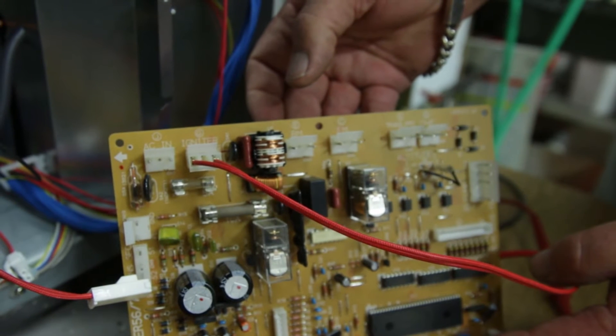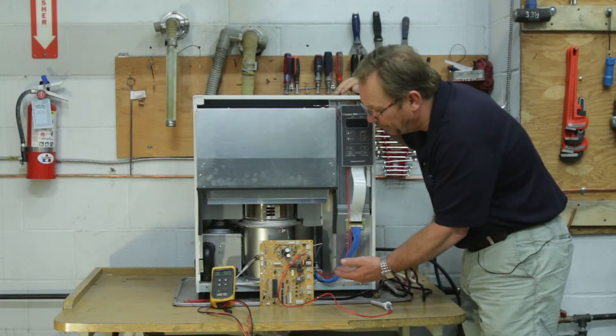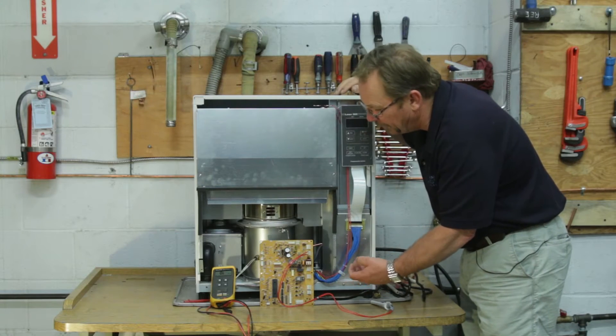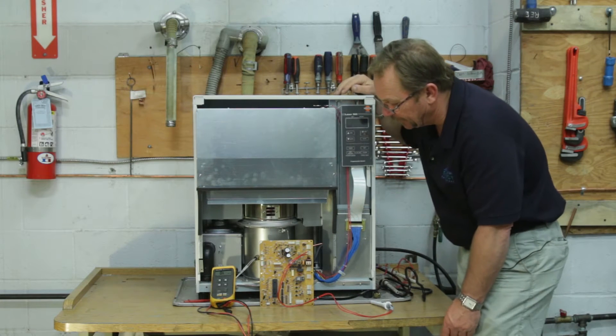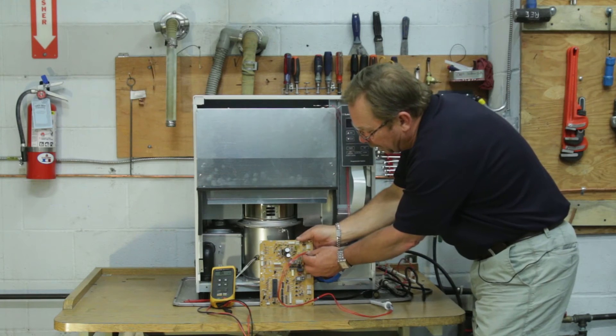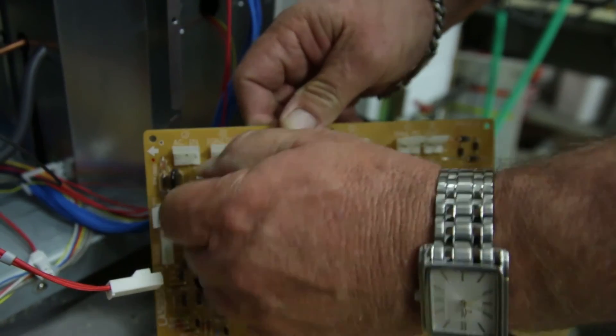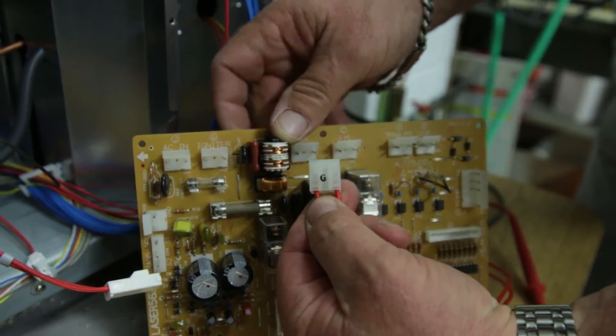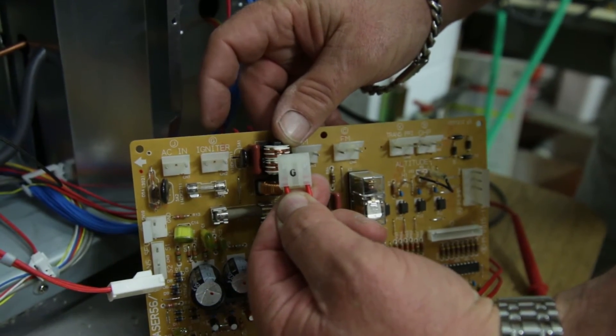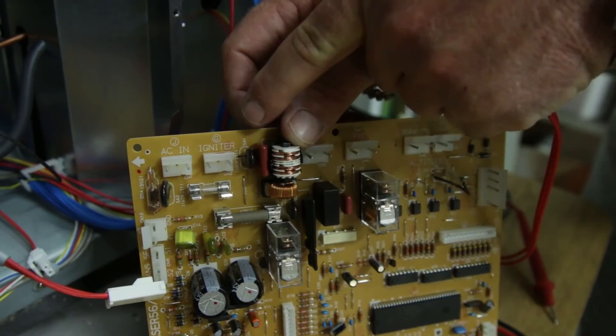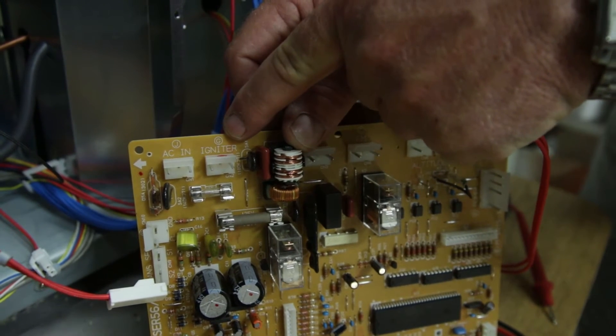Right here in front of us is a main circuit board out of an older Toyotomi stove. This is for a Laser 56, Laser 73. In order to get our measurement, we're going to unplug our molex pin connector right here. We can see that it does have the G terminal on it, and also on our board it has the G terminal right here to help us with that.